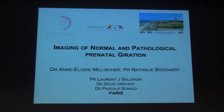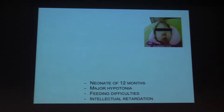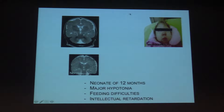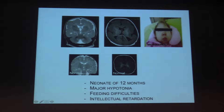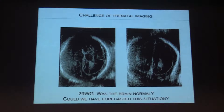To begin, here is an unfortunate case of a little girl aged 12 months who presents with major hypotonia, feeding difficulties, and intellectual retardation. An MRI was requested. Here is the MRI of the little girl alongside a normal MRI at her age. You can see that regarding the cortical aspect, this MRI is completely abnormal.